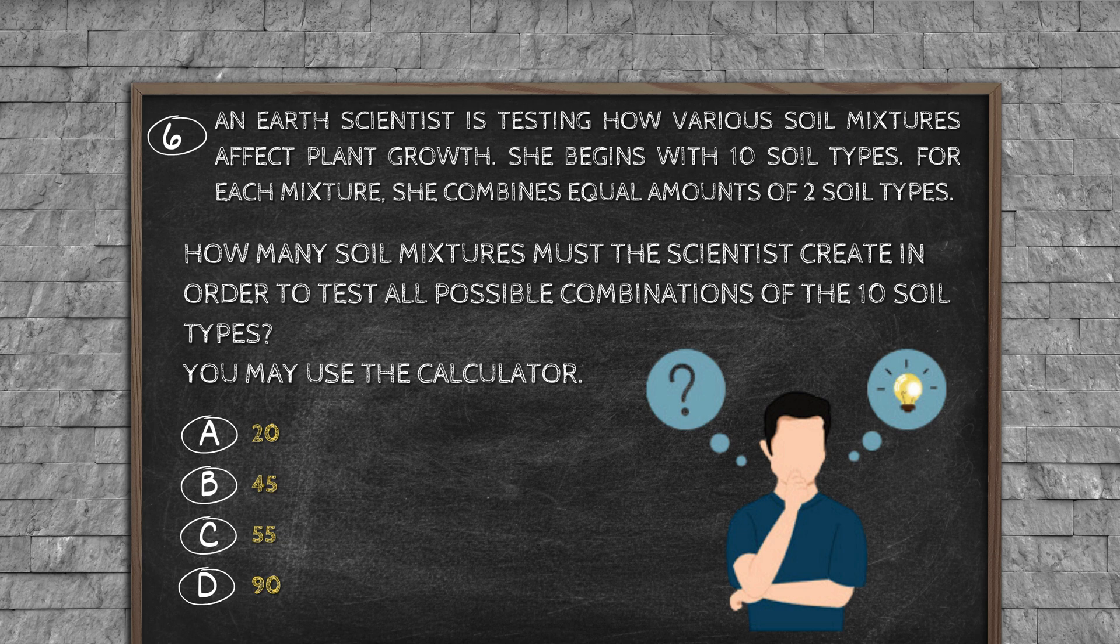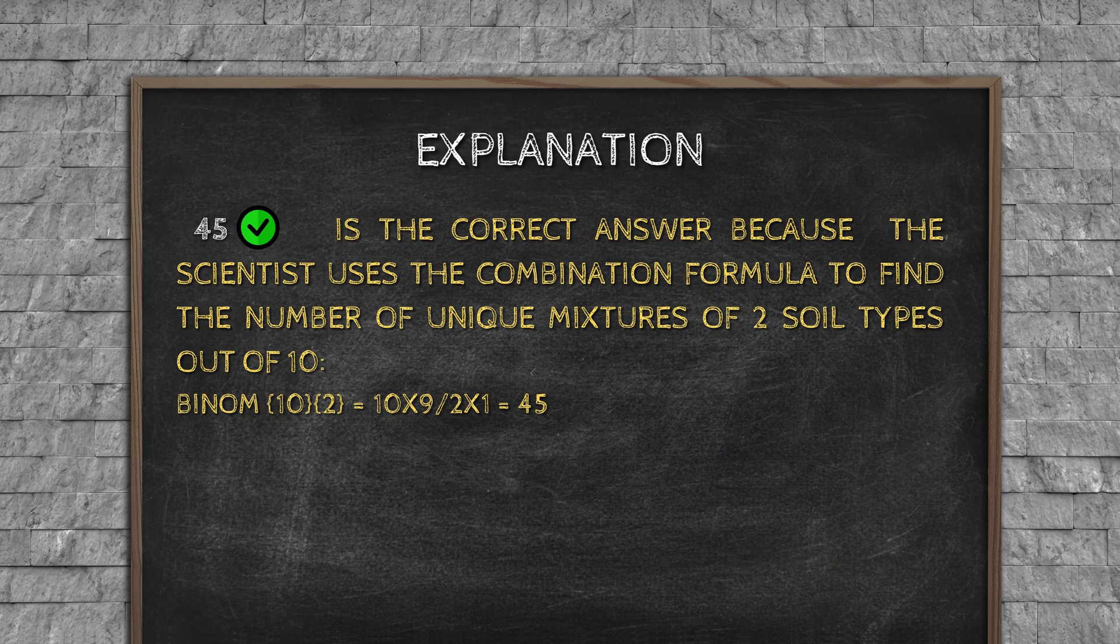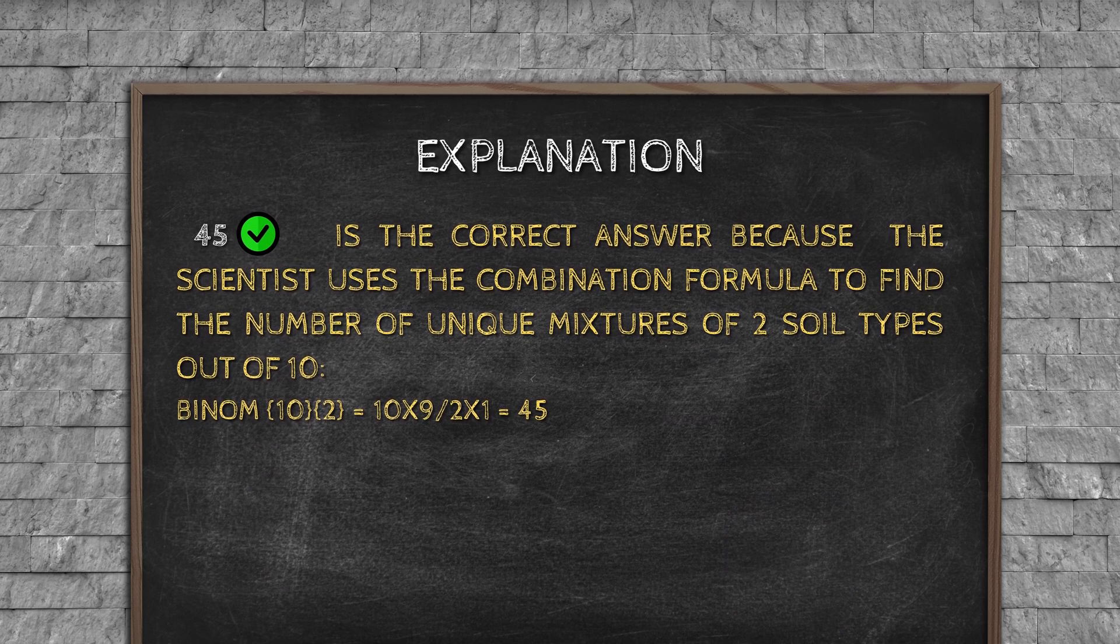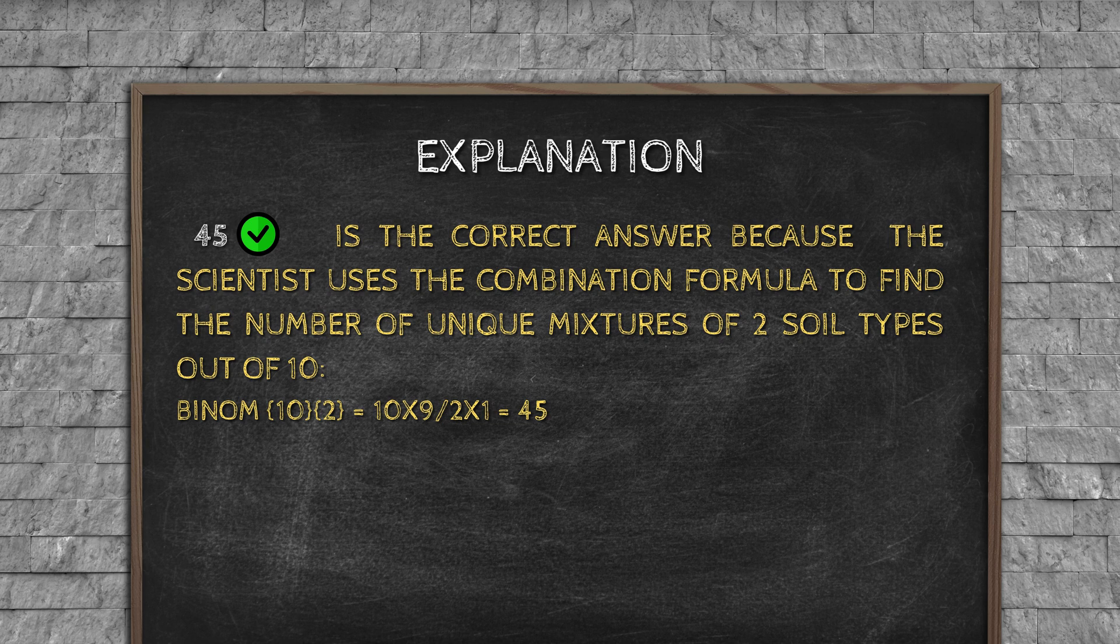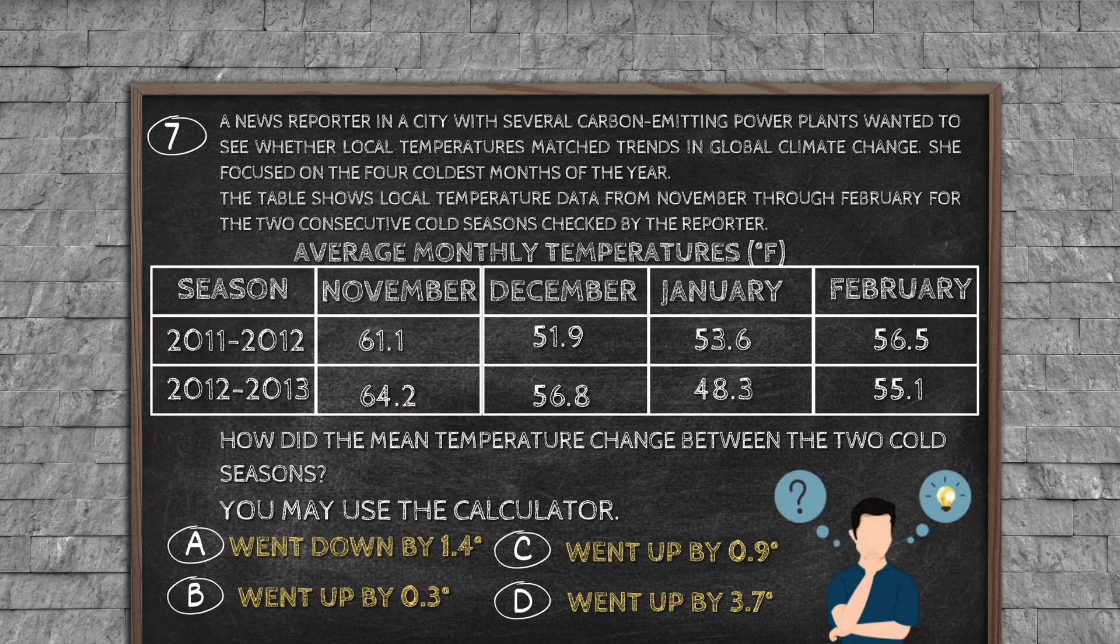Question number 6: An Earth scientist is testing how various soil mixtures affect plant growth. She begins with 10 soil types. For each mixture, she combines equal amounts of two soil types. How many soil mixtures must the scientist create in order to test all possible combinations of the 10 soil types? You may use the calculator. Option A: 20, option B: 45, option C: 55, option D: 90. Explanation: 45 is the correct answer because the scientist uses the combination formula to find the number of unique mixtures of two soil types out of 10. 10C2 equals 10 times 9 slash 2 times 1 equals 45.